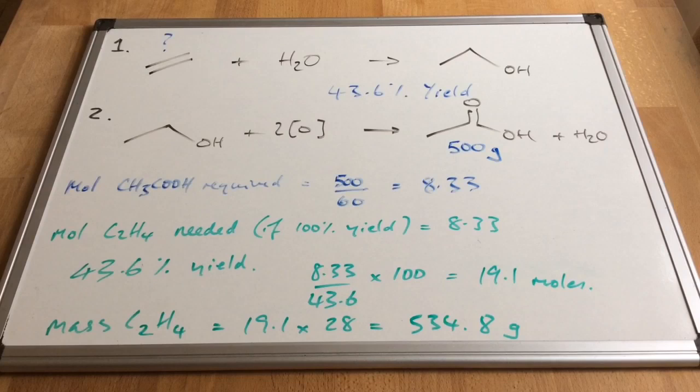Now we're going to do the final step. The mass of ethene required is the moles multiplied by the MR and that comes out at 534.8 grams to one decimal place.